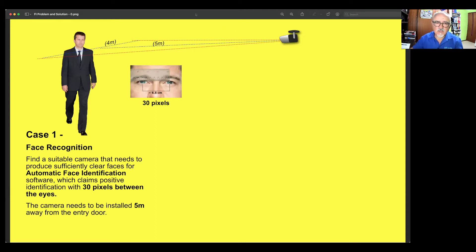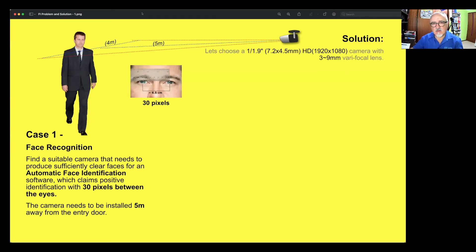First thing that we need to do in order to use the calculator properly, we need to know which camera we are using. Let's choose a camera with a 1/1.9 inch sensor. That means the sensor itself is 7.2 by 4.5 millimeters. This is already built in the Videolabs calculator. But let's also clarify that we have decided to use HD sensor. That means the number of pixels are 1920 by 1080.